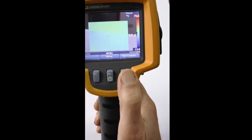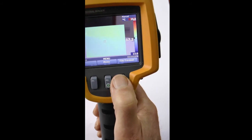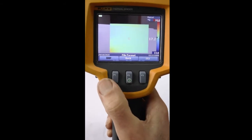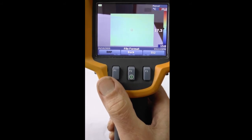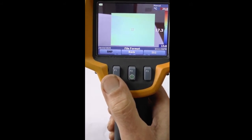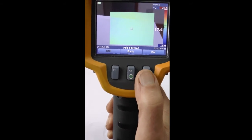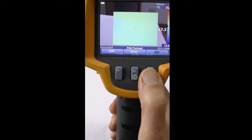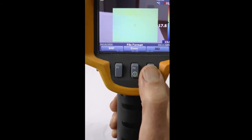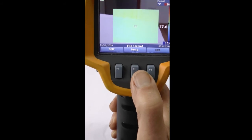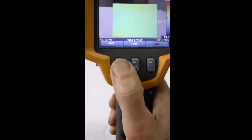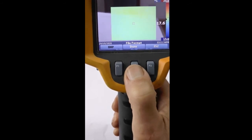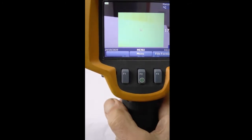finally on the right. That means this right-hand button will select the file format. We have a choice: on the left it's showing BMP, standing for bitmap, which is what I suggest we use. Over here I could select IS2. The problem with IS2 is it's a Fluke proprietary format that is only for use with the SmartView software, so if you're not going to use that, then you must choose BMP. When that's selected, you hit done, and now we know we've got the right file format.